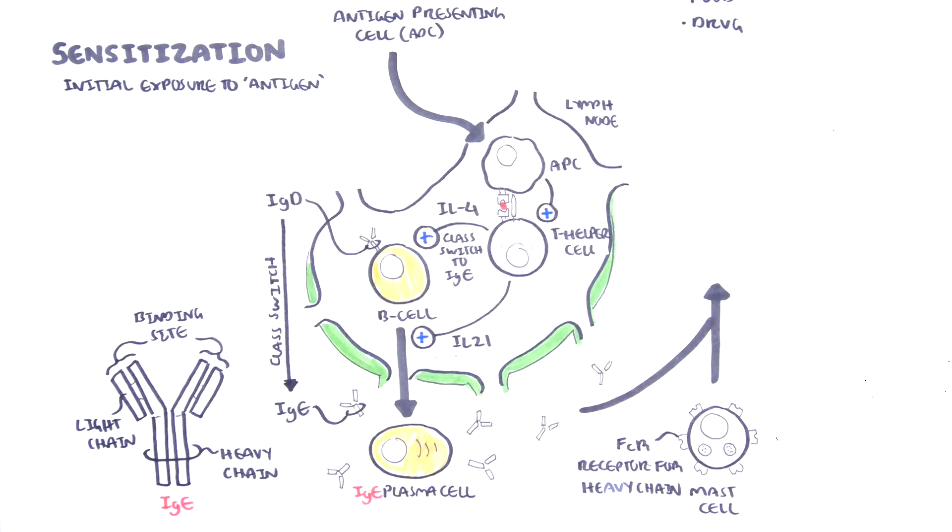The heavy chain of IgE will bind on the Fc receptor. This does not activate the mast cells, rather the IgE sits there and just chills.